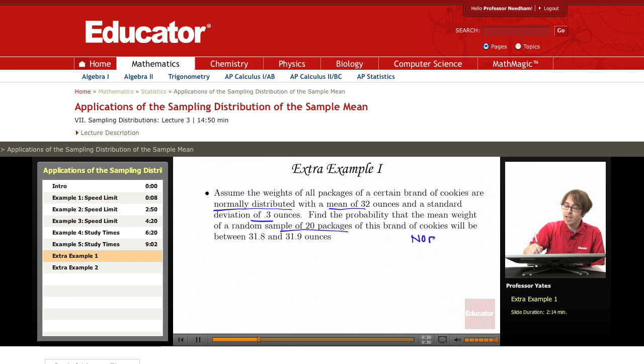So I underline the information that we're going to need. I know I have a normal distribution. I know that the mean is 32, the standard deviation is 0.3, and my sample size is 20.